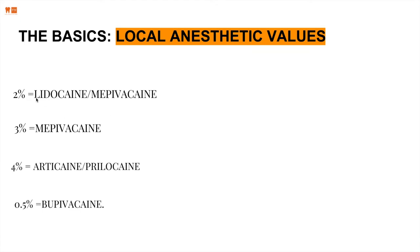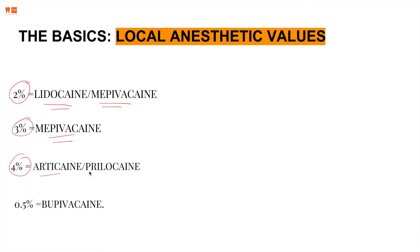Here are examples of local anesthetics at each percentage: 2% is usually lidocaine and mepivacaine; 3% is seen as mepivacaine plain; 4% is usually articaine and prilocaine; and 0.5% is bupivacaine. Fun fact — bupivacaine is one of the longest-lasting local anesthetics in terms of duration, which is why it's used at the lowest percentage.